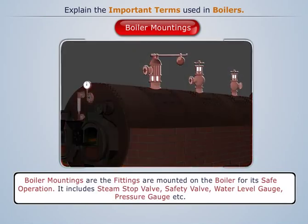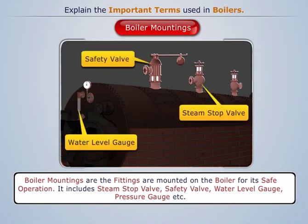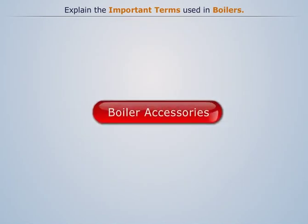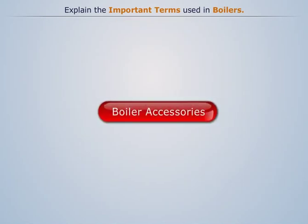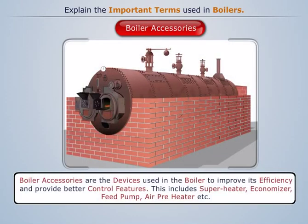Boiler mountings: these are the fittings mounted on the boiler for its safe operation. This includes steam stop valve, safety valve, water level gauge, pressure gauge, etc.